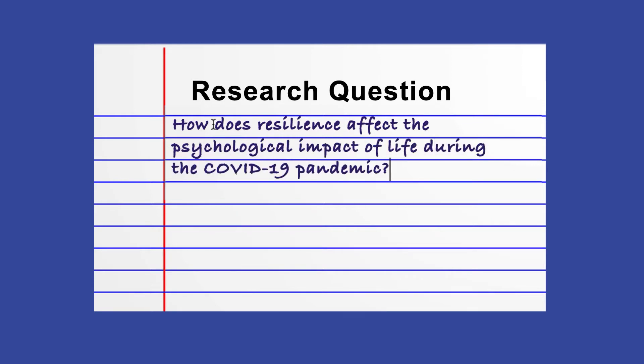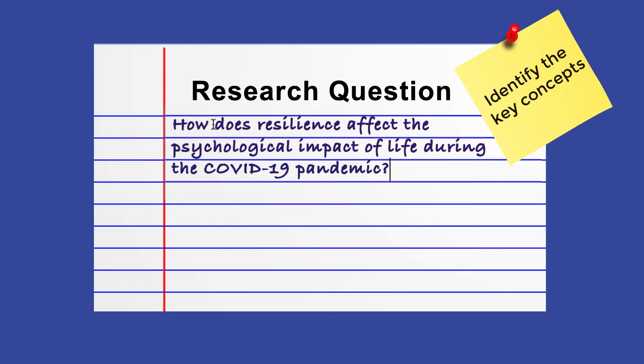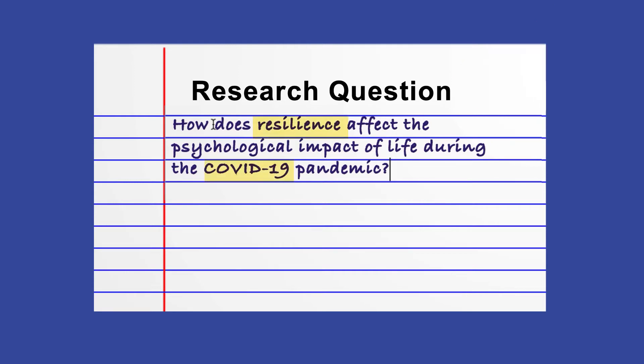Before you start searching, identify the most important concepts from your question. You can use these concepts as search terms in APA PsychInfo. Resilience and COVID-19 are the two main concepts that we'd want to use in our sample question.